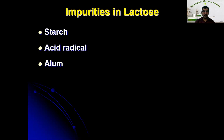The next impurity is alum, that is aluminum oxide. It may be present if the lactose is prepared in aluminum vessels. To identify it, we add sodium hydroxide to the lactose solution. If a white precipitate is obtained, that indicates the presence of alum.